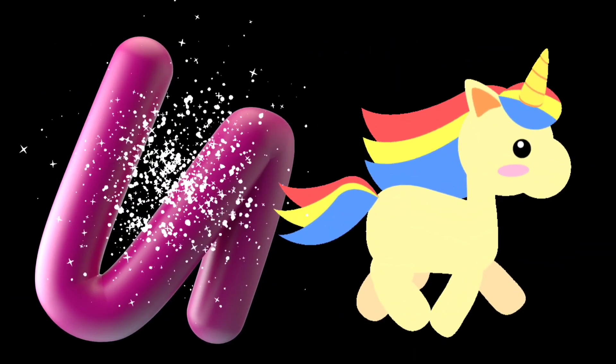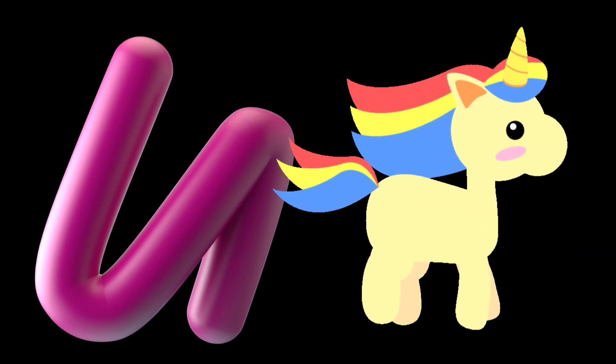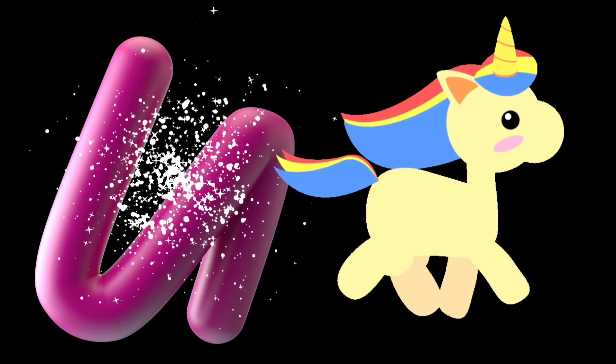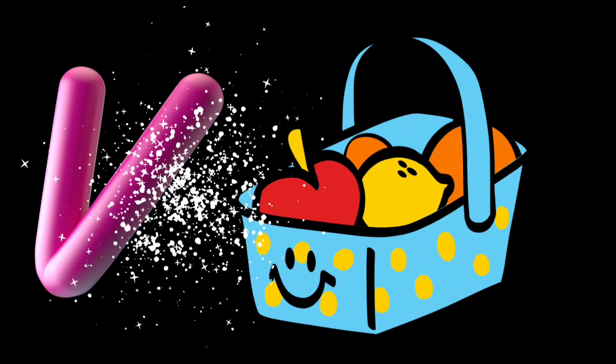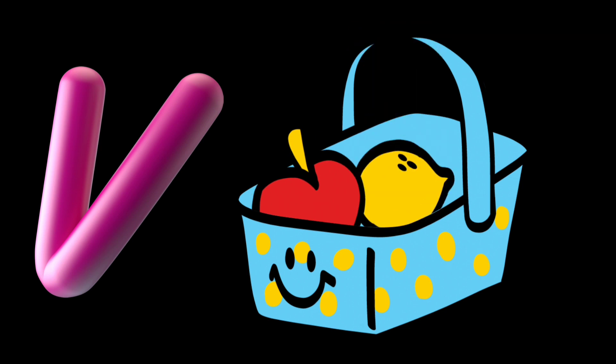U. U is for unicorn. V. V is for vegetables.